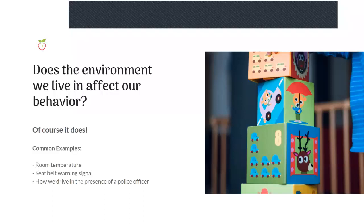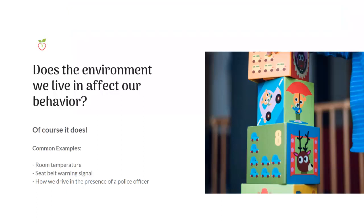Some common examples: if it's really cold in a room, you go grab a jacket; if you're hot, you take some layers off. Another example is the seatbelt warning in your car — you hear that ding, ding, ding, and it signals you to change your behavior and put your seatbelt on. And how we drive in the presence of a police officer — immediately your hands are at 10 and 2, you're looking straight ahead, your cell phone is nowhere near you. The environment changes our behavior because of the contingencies that are in place.